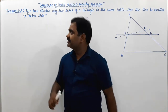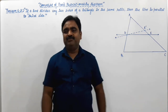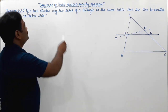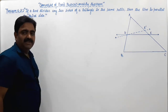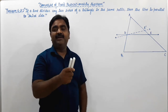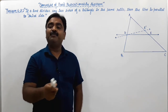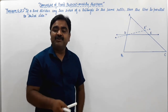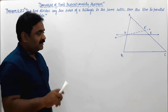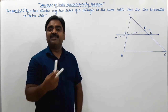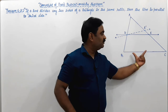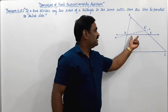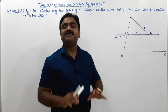We are going to discuss Theorem 6.2 right now. It is just the converse of the Basic Proportionality Theorem. So this theorem is called the Converse of Basic Proportionality Theorem. In Theorem 6.1, when a line is drawn parallel to any side of a triangle, this line divides the sides of the triangle in the same ratio.